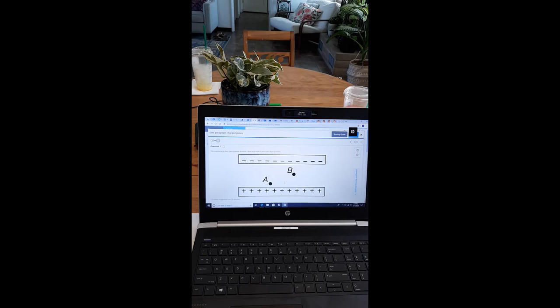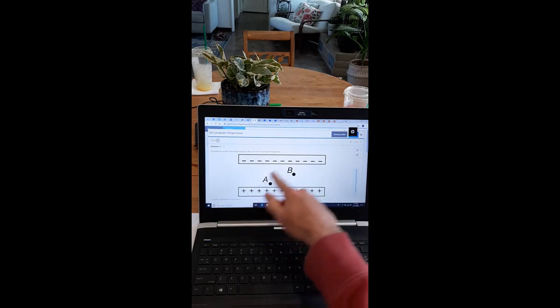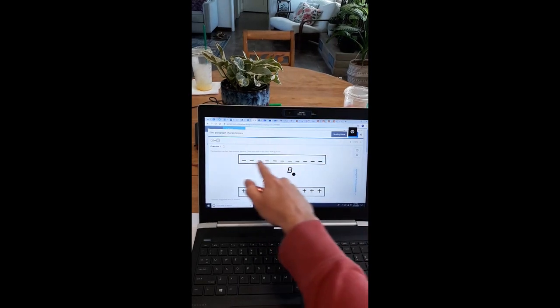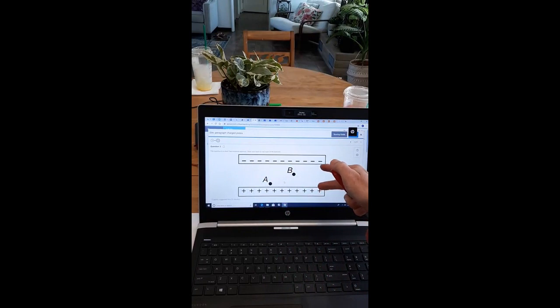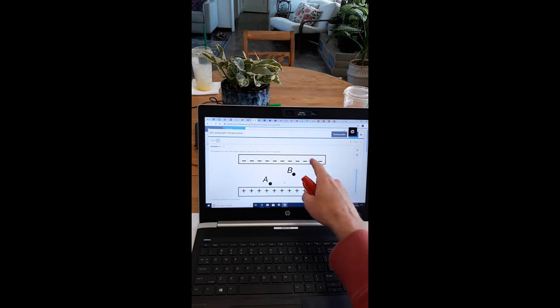We're looking at two plates that have charge on them. This plate is positive, negative. This amount of charge Q is equal to this amount of charge Q. These plates are separated by some distance D. Whenever you have this situation where you have two parallel plates separated like this and they have the same amount of charge,